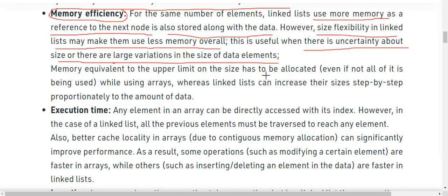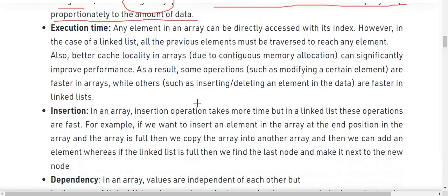Memory equivalent to the upper limit on the size has to be allocated even if not all of it is being used while using arrays. This is the drawback of array where linked list can increase their size step by step proportionally to the amount of data that we want to store. Next major difference is execution time.